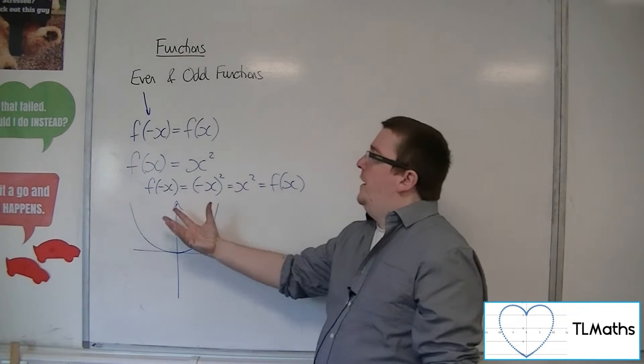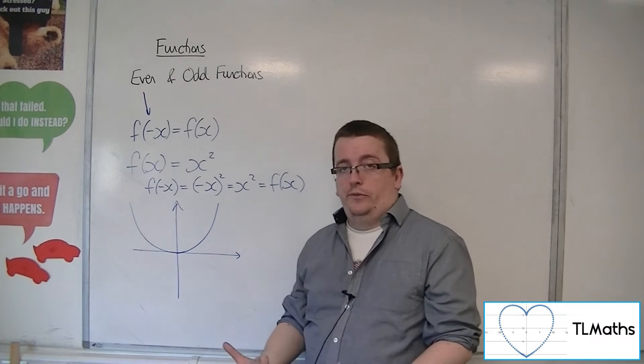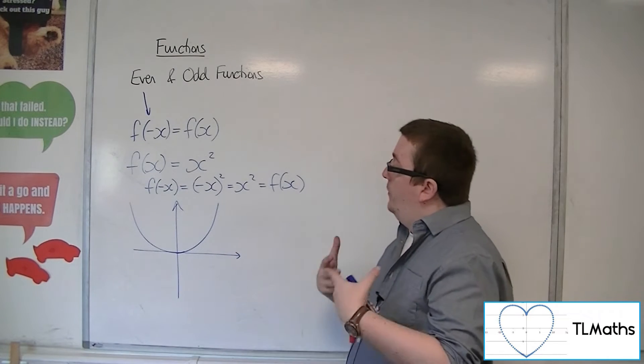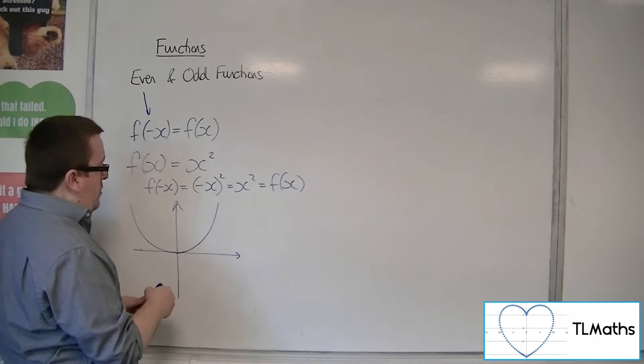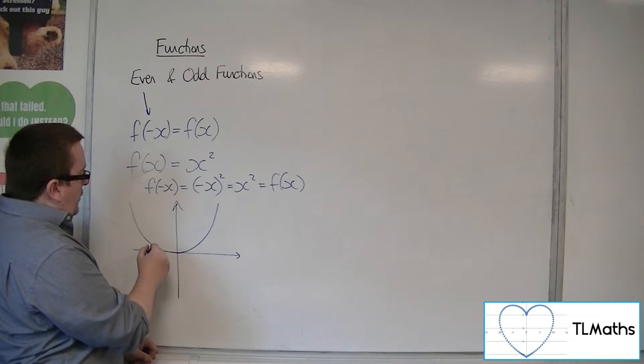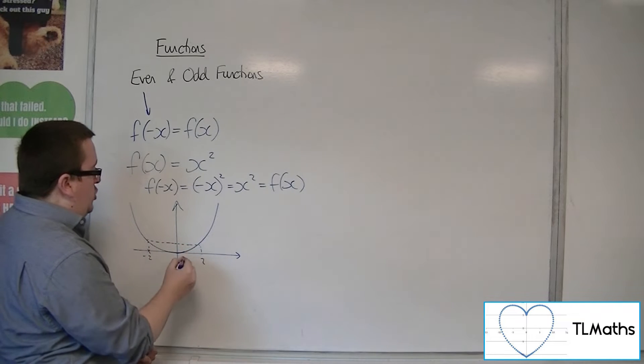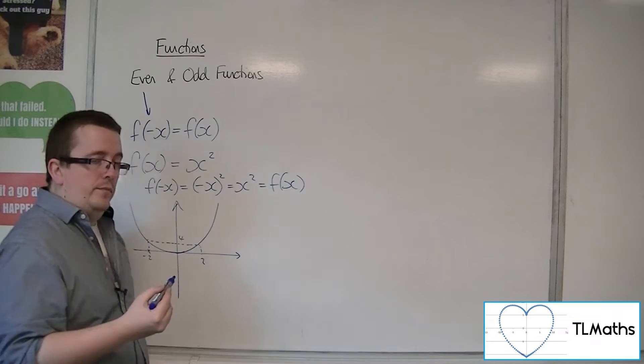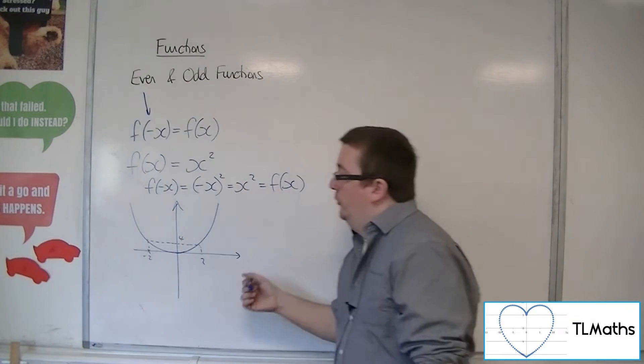And what this is saying is, well, if I replace the x with minus x, I get the same result. I get the same y value. And that is because of this mirror line. So the fact that I can choose x equals minus 2, for example, will get me the same result as choosing 2.